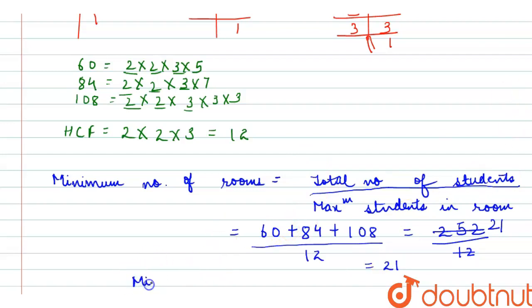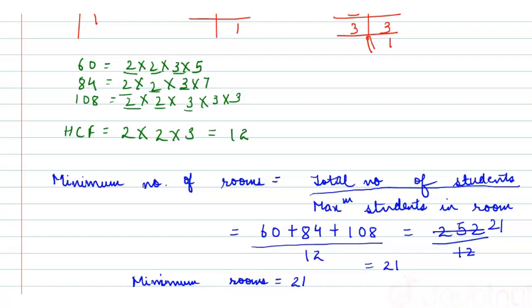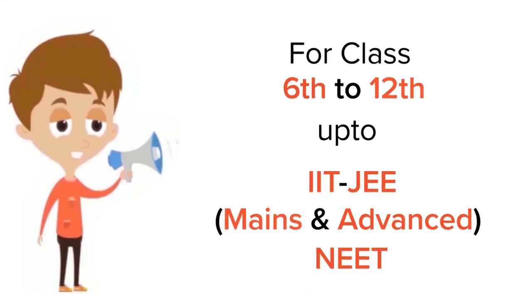So the minimum number of rooms is 21. I hope the solution is clear — thank you for watching.